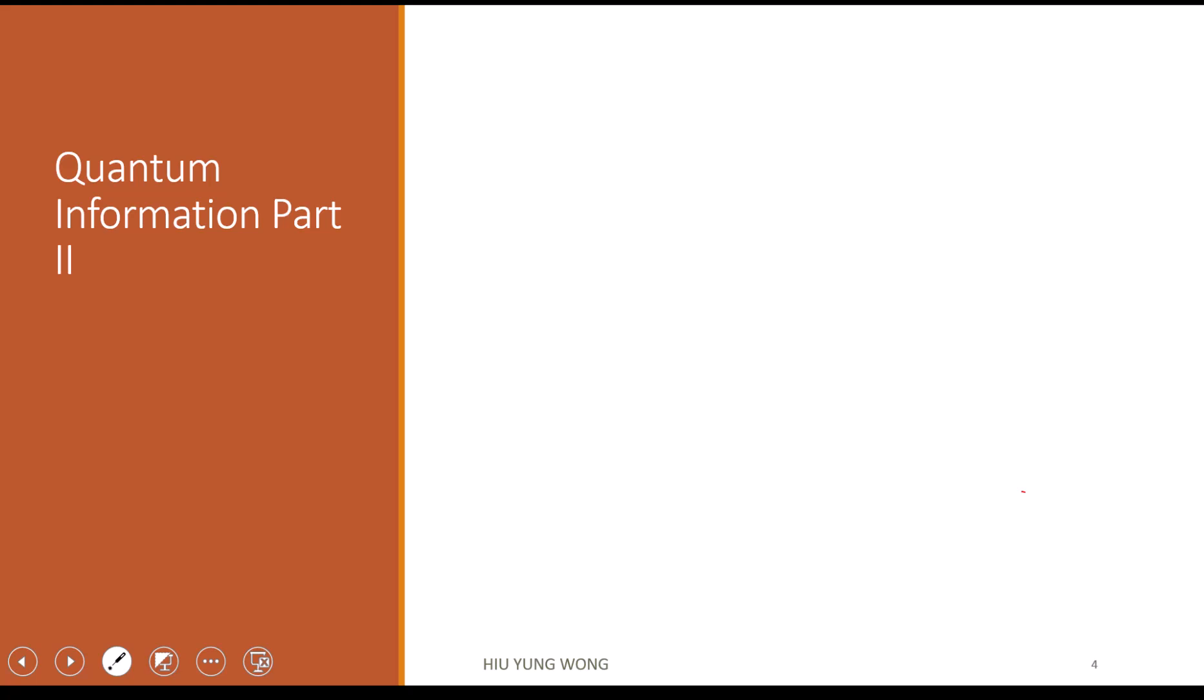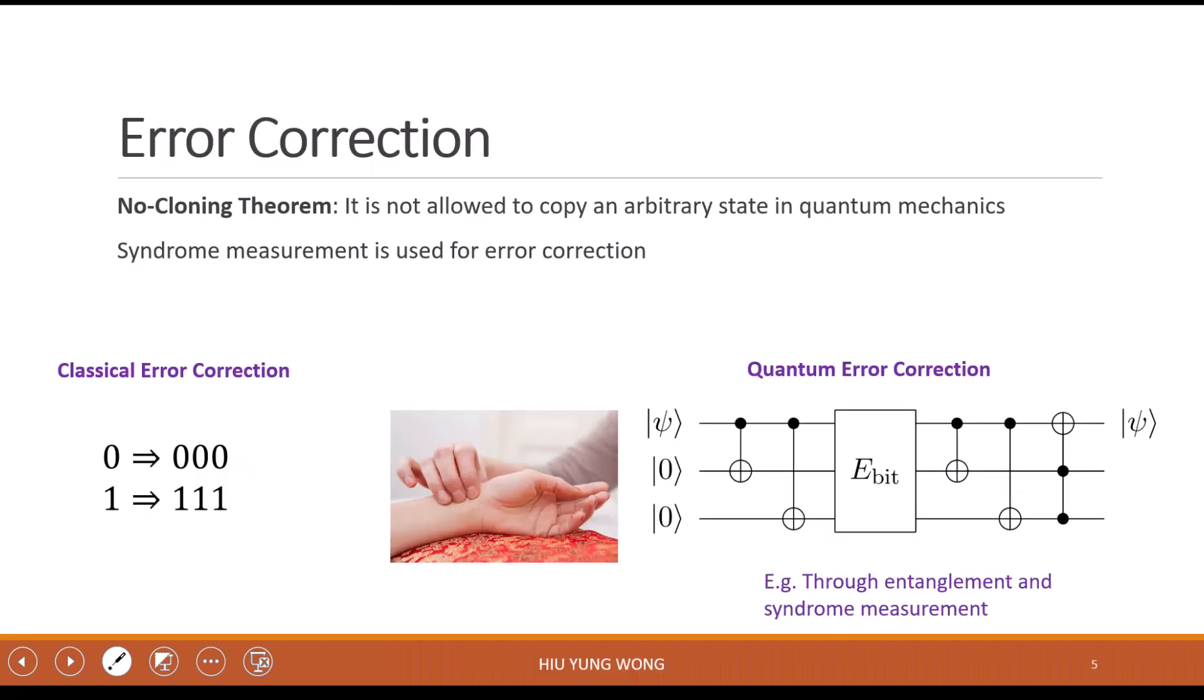Okay, so let's finish the second part of quantum information. One very important theorem in quantum mechanics is the so-called no-cloning theorem. What does it mean? It means you cannot copy an arbitrary state.